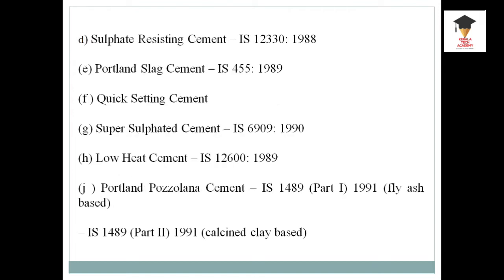The other grades are: sulfate resisting cement, Portland slag cement, quick setting cement, super sulfate cement, low heat cement, and Portland pozzolana cement. Portland pozzolana cement is also called fly ash based cement.